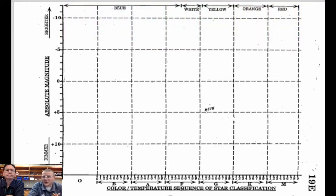So you can see the Sun sitting right there in the middle being a 4.8 magnitude and around a G2 class star. How do I know all this information?